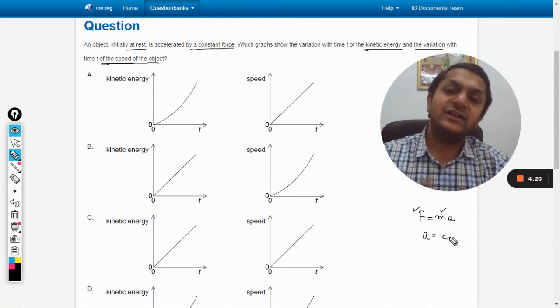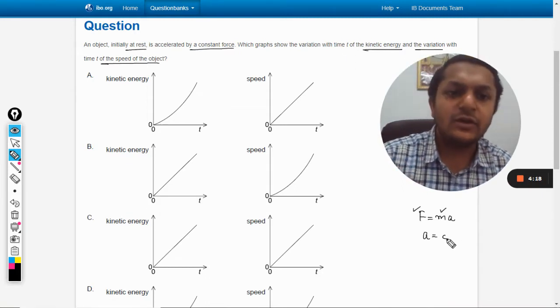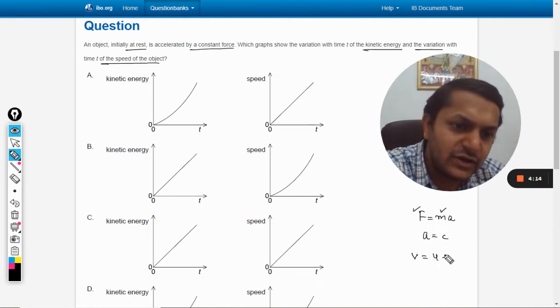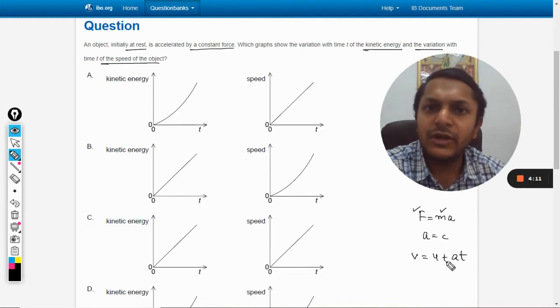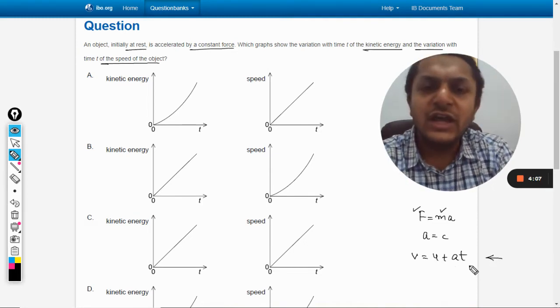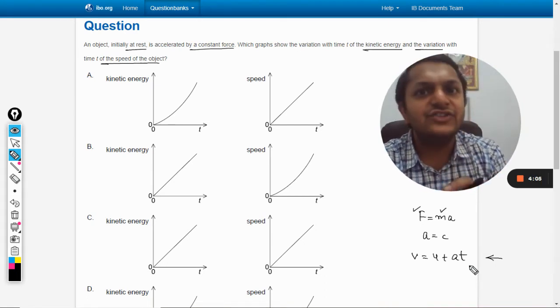So the body is accelerating at constant acceleration. When body is accelerating at constant acceleration, v equals u plus at, because we know that this equation of motion can be used under the condition of uniform acceleration.